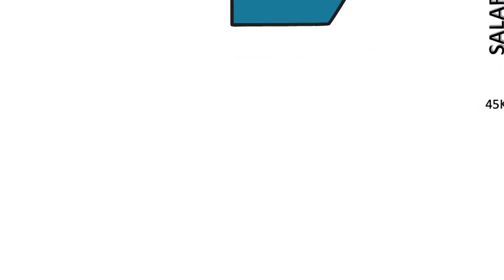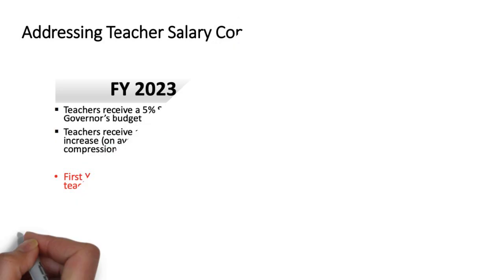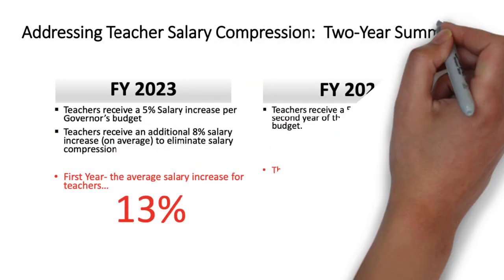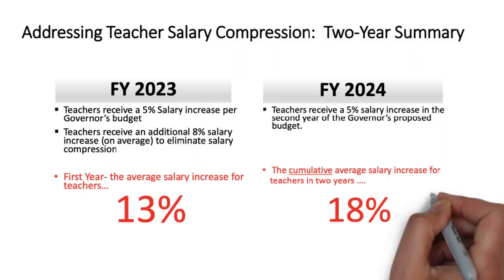My proposed budget aggressively addresses both teacher compression and compensation for all staff. In fact, under my proposal, the average salary increase for teachers for FY 2023 would be 13 percent, and the cumulative average salary increase in two years would be 18 percent.